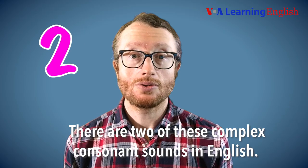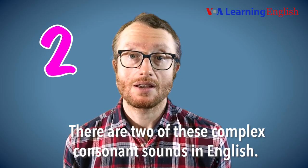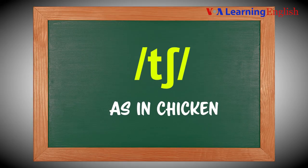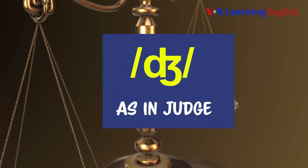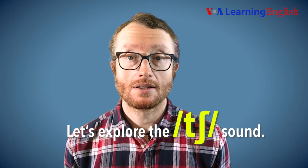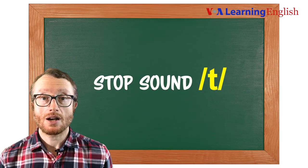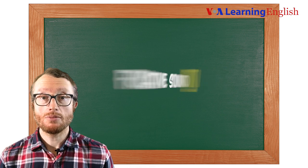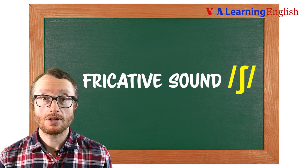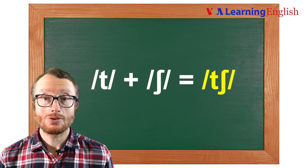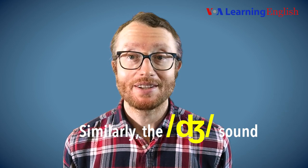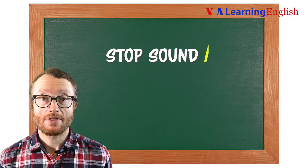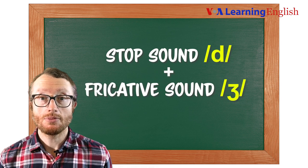There are two of these complex consonant sounds in English. They are 'ch' as in chicken and 'j' as in judge. Let's explore the 'ch' sound. It starts with a stop sound and then moves to a fricative sound, 'sh'. When you add the two sounds together, you get 'ch'. Similarly, the 'j' sound starts with a stop sound and then moves to a fricative sound, 'zh'.